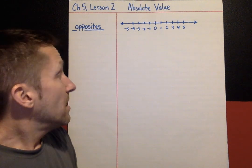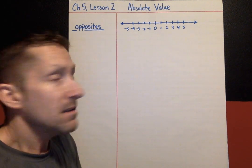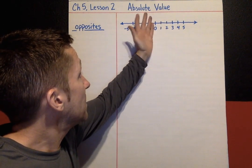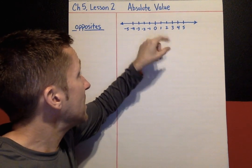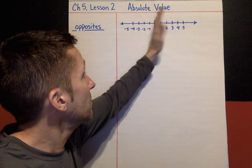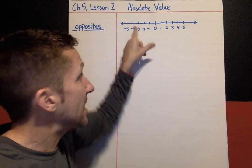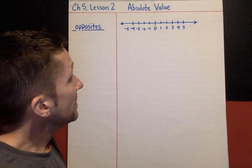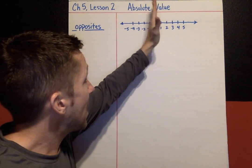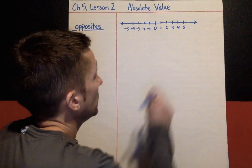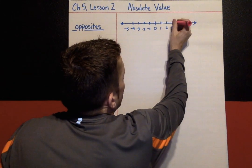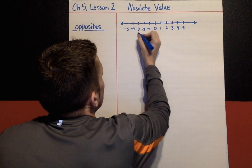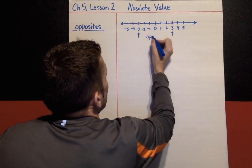Another way to think about that: if you're trying to find the opposite of something, like the opposite of 3 — imagine folding the number line at zero. 3 is going to land on its opposite. If we fold at zero, 3 lands on negative 3. So 3 and negative 3 are opposites. If you fold the number line over at zero, opposites land on themselves.